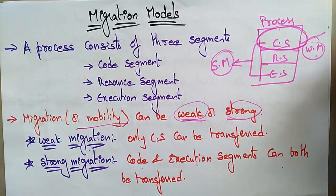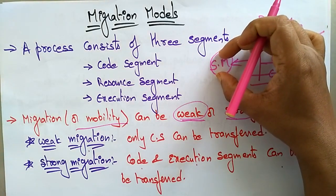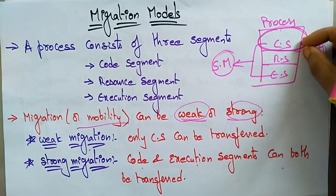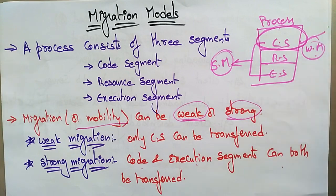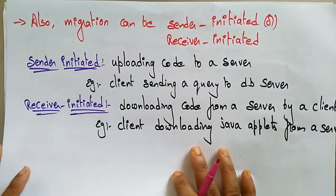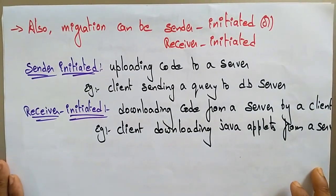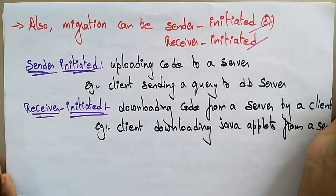In weak migration, only the code is transferred and it doesn't carry the execution state. The execution segment is not transferred, which is why it is called weak migration. The migration may be strong or weak, and it can also be sender-initiated or receiver-initiated.